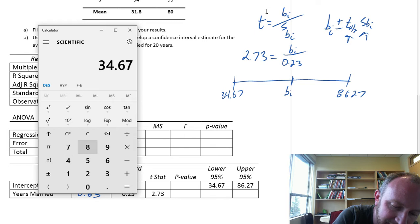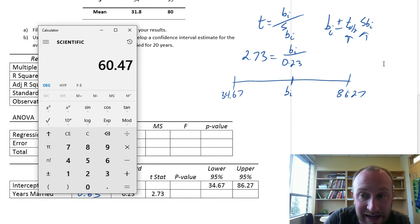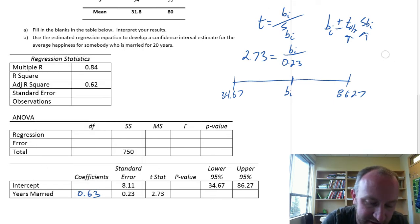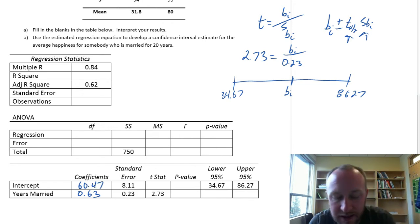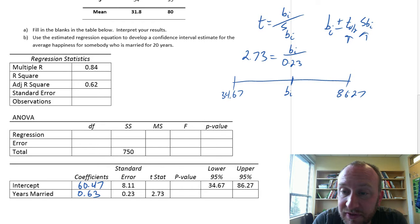34.67 plus 86.27 divided by 2 gives us exactly the middle of that interval, 60.47. Much easier way to find our coefficients.